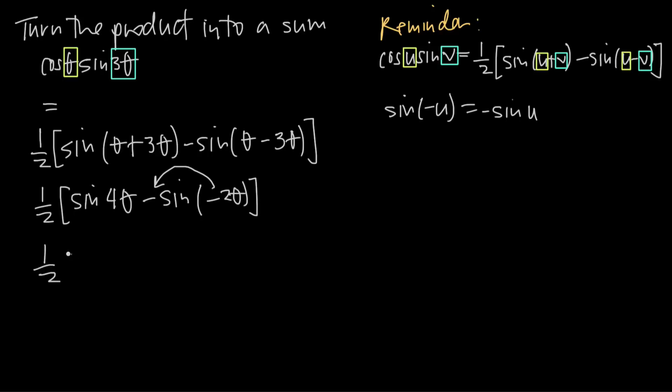So I'm going to be left with 1 half times sine of 4 theta. And then instead of minus, I'll have plus sine, and we brought that negative sign out in front, it made this a positive. So we're left with sine of 2 theta.